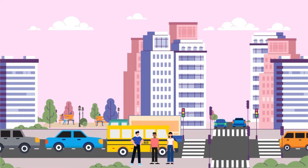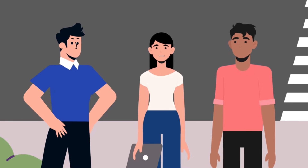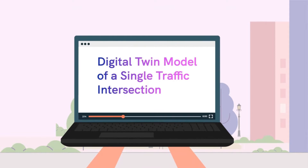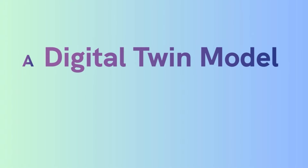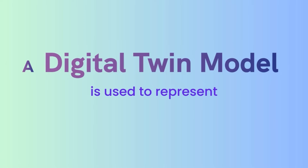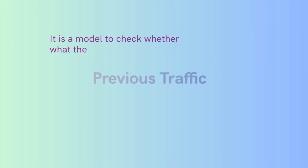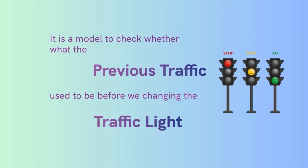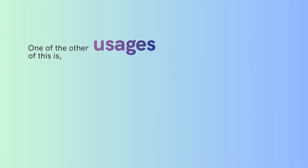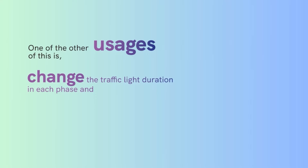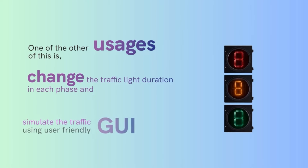We can observe the digital twin model of this junction to monitor traffic congestion. A digital twin model is used to represent the traffic at the intersection and serve as a reference model. It also allows us to check what the previous traffic was like before changing the traffic light. Additionally, it can be used to change the traffic light duration in each phase and simulate the traffic.